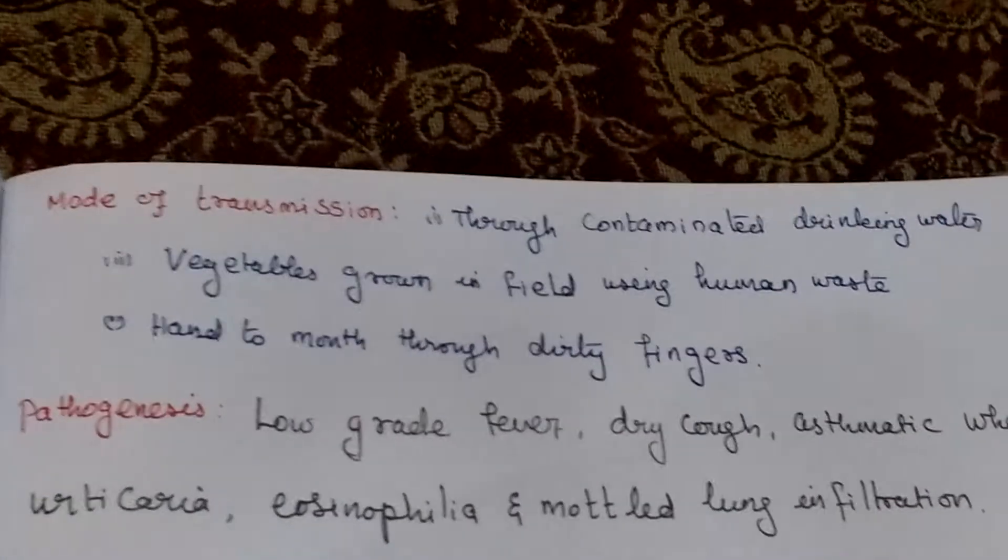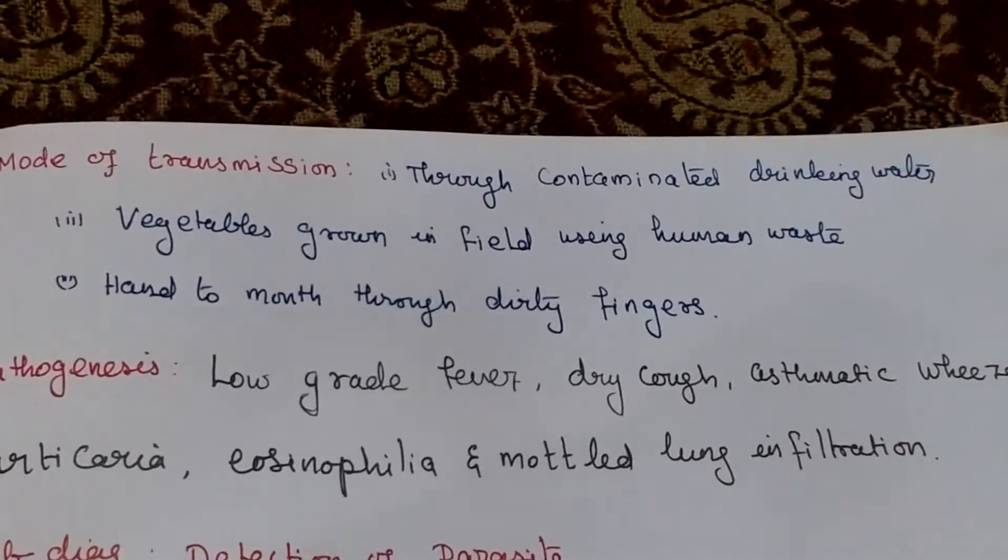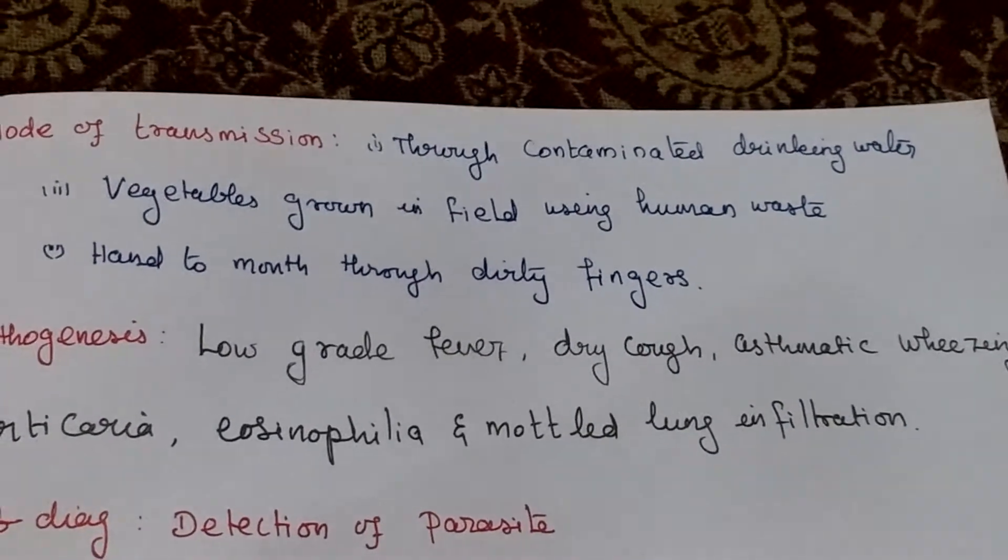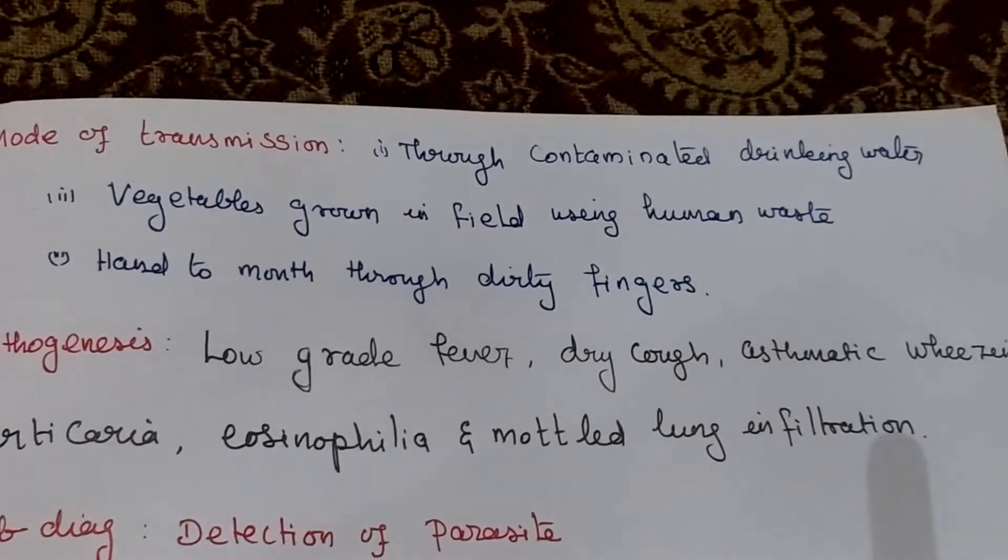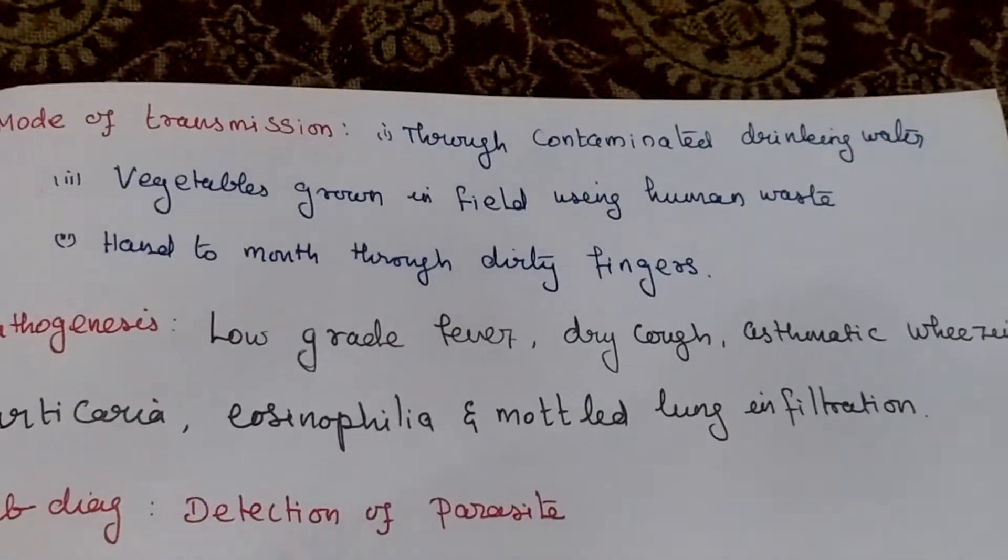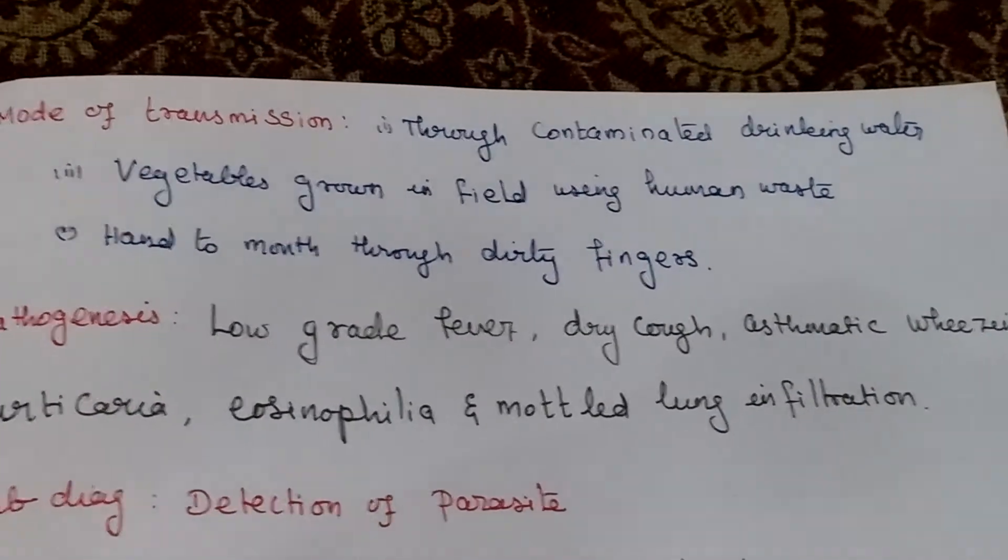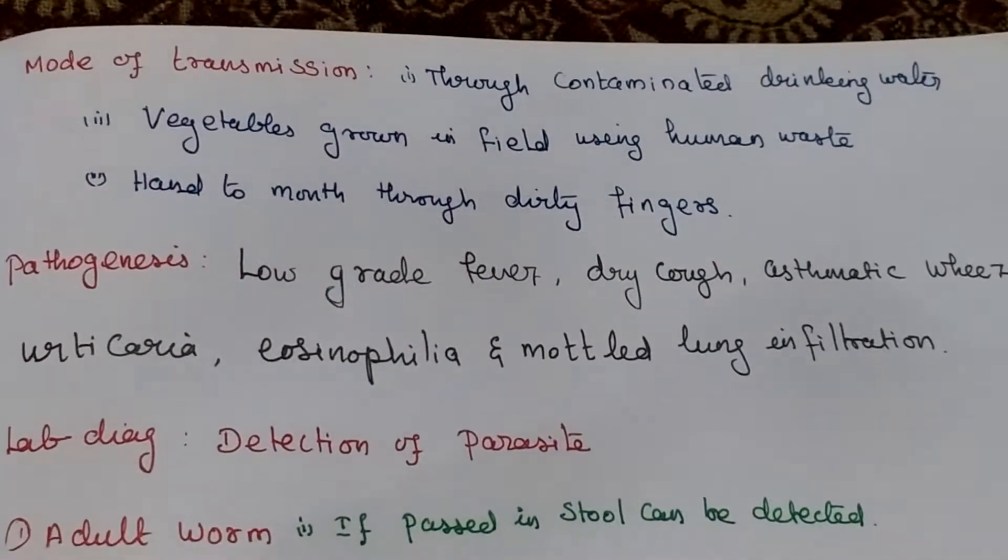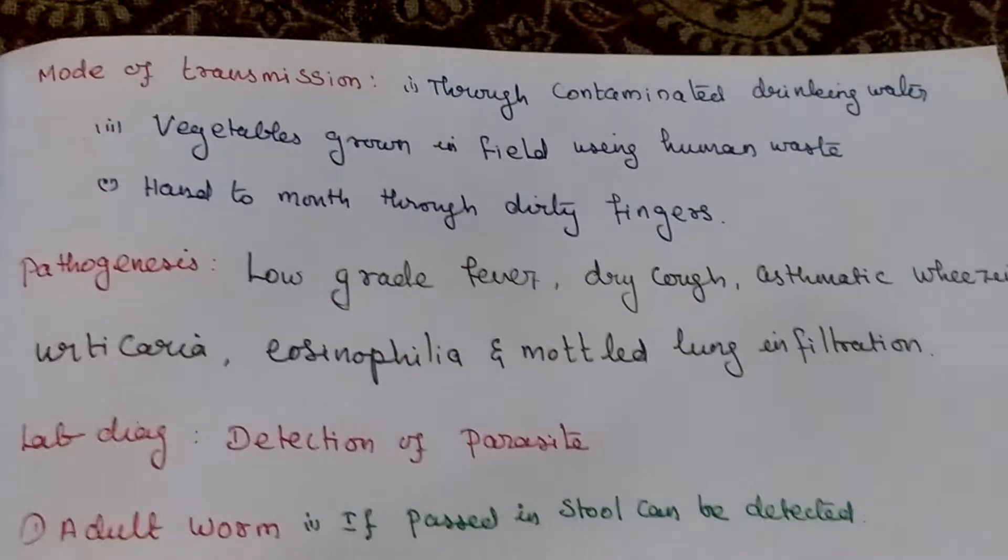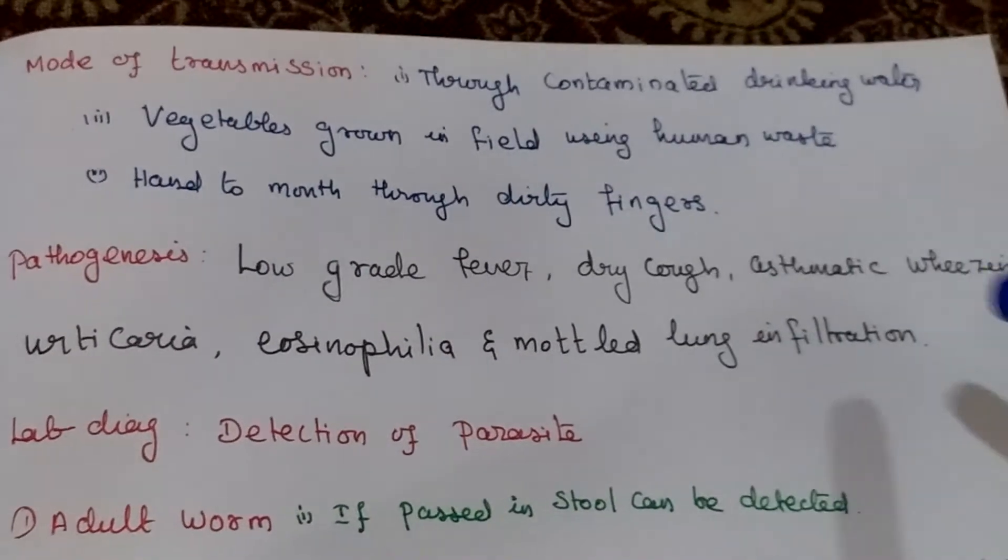Mode of transmission: through contaminated drinking water, vegetables grown in fields using human waste, that means night soil, then hand to mouth through dirty fingers. Pathogenesis: low grade fever, dry cough, asthmatic wheezing, eosinophilia. These conditions it will cause.